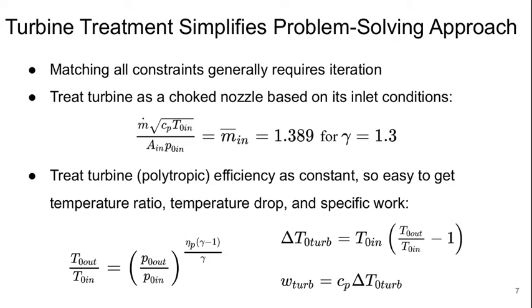If we also treat the polytropic efficiency of the turbine as a constant, then it's easy to get the temperature ratio, temperature drop, and the specific work. The temperature ratio is related to the pressure ratio via the polytropic efficiency. The temperature drop is related to the temperature ratio and the inlet temperature, and the specific work is of course just CP in the turbine times the stagnation temperature change.